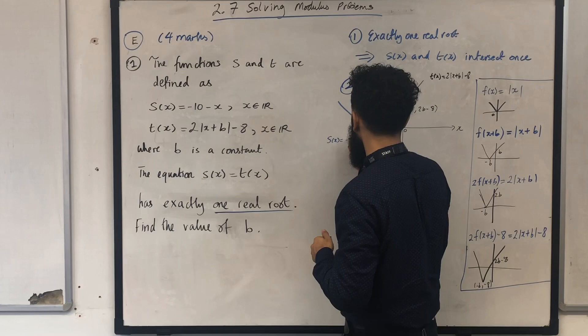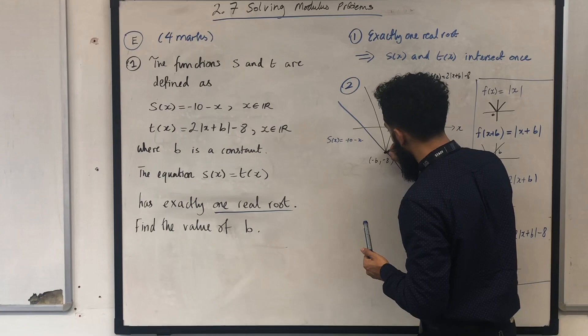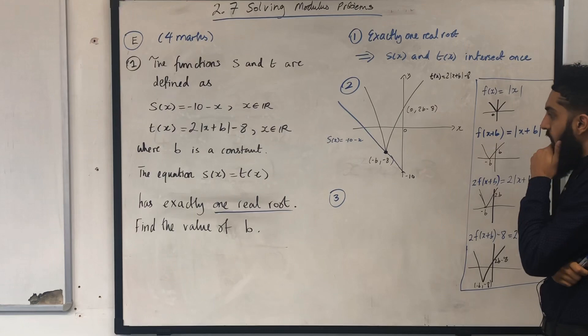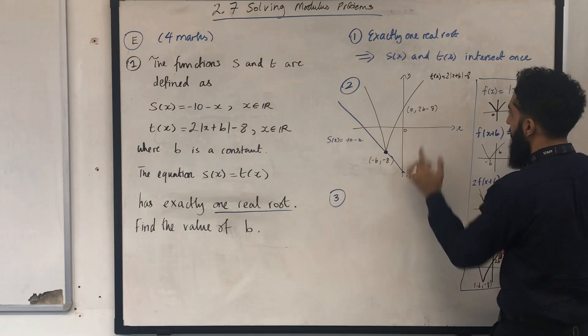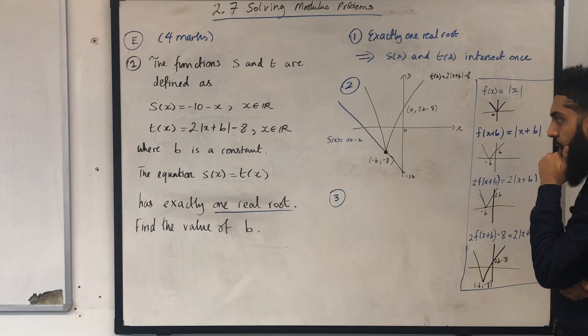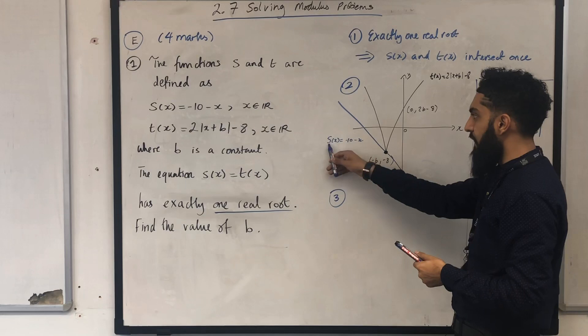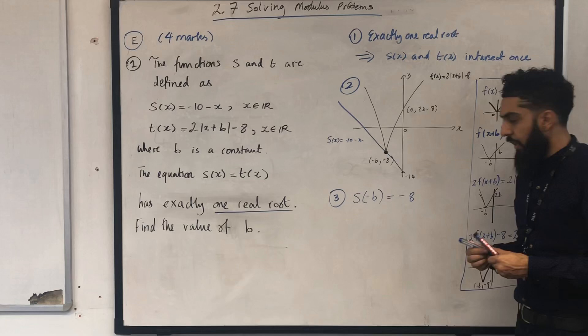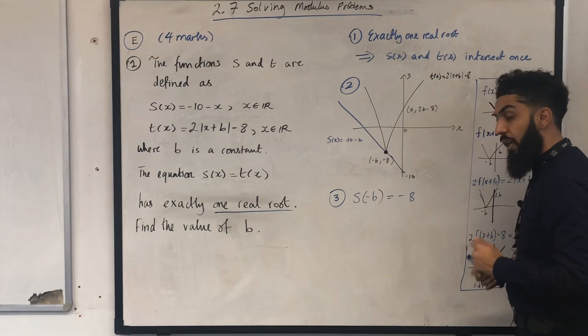I've got one intersection as stated in the question. The graphs of s of x and t of x meet at this particular point. I conclude that if I substitute x equal minus b into the function s of x — so s of minus b — the output, the y-value, must be minus 8. This equation will help us generate an equation involving b, hence we can solve for b.